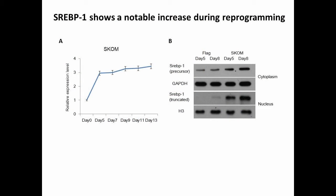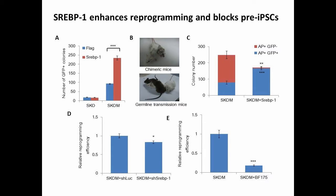While attempting to understand the mechanism, we found that SREBP1 shows a huge increase at the protein level and its truncated form also gets a huge increase. We found that it can enhance OSKM- but not OSK-induced reprogramming, and also SREBP1 can block the partial reprogramming cells, the pre-iPSCs.